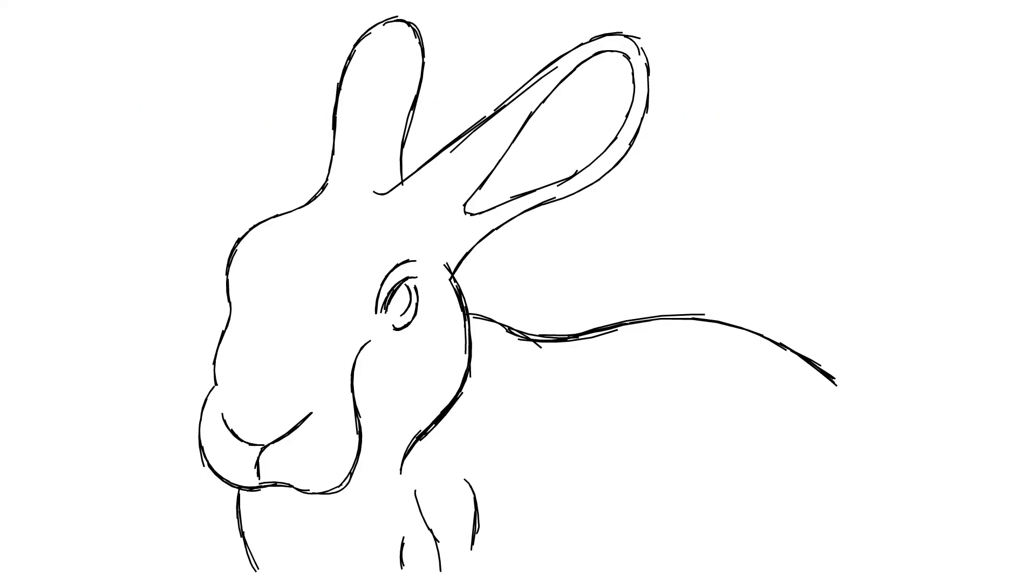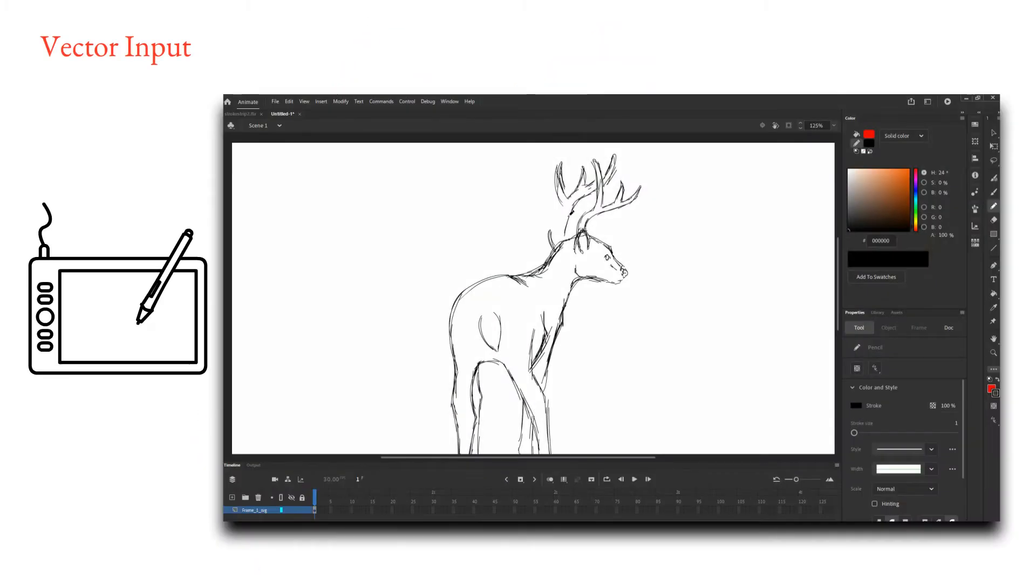When creating free-form drawings, artists routinely employ clusters of overdrawn strokes to convey intended aggregate curves. These raw drawings are increasingly created and stored in vector form.